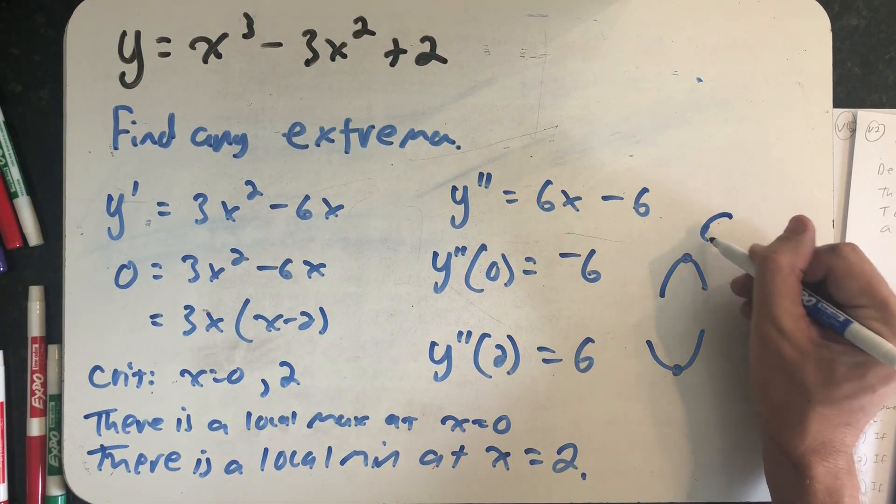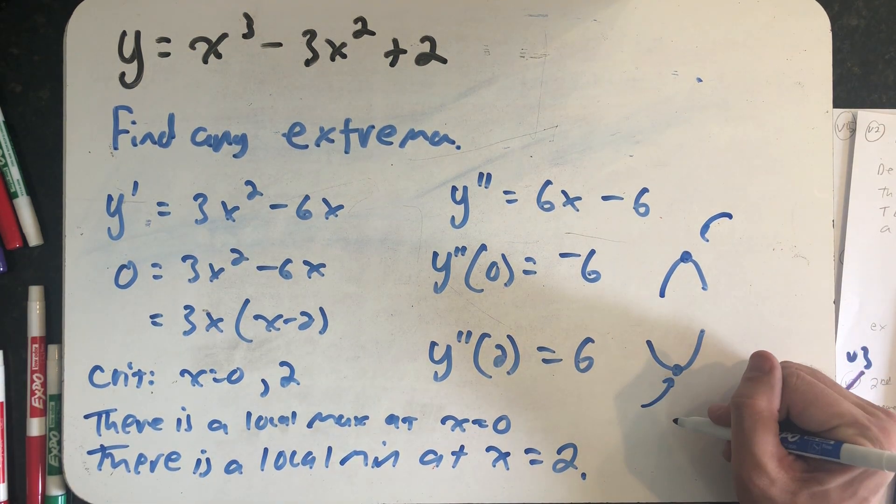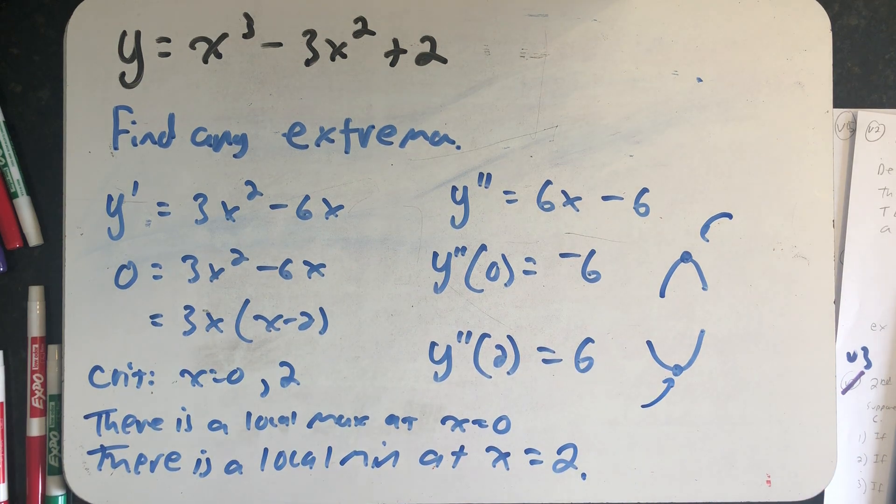The concave down shape puts the value I'm looking at at the top, and the concave up shape puts it at the bottom. And that way I'm always just looking at a picture of what my graph should look like near the critical point I'm examining.